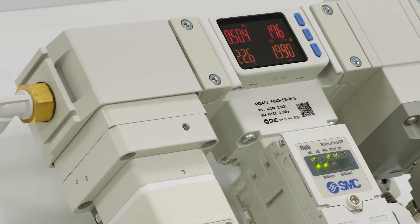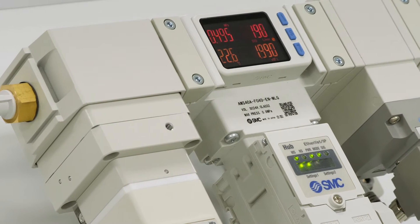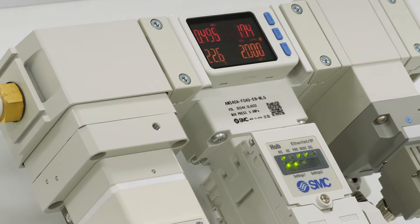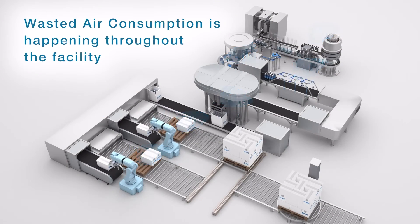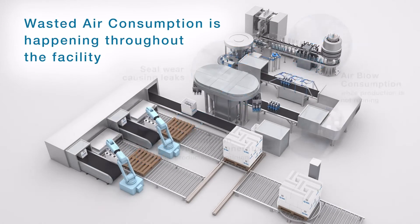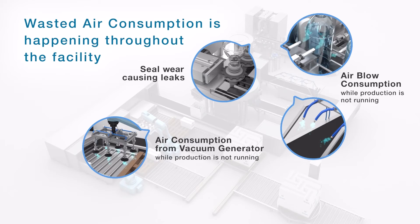For example, when your machine has stopped production during break time, over the weekend, during a shift, or tool or parts change, you could still be consuming air from air purge equipment, worn seals, and leaking pipe connections.